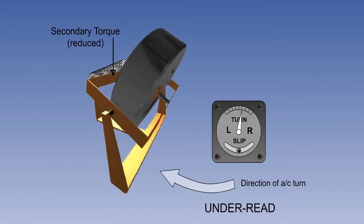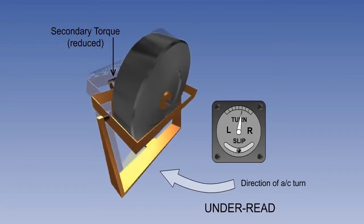If the gyro spin speed slows — which may happen in an air-driven gyro should the air filter become partially blocked or a leak develops — the gyro will underspeed, and the instrument will under-read the rate of turn. The reason that the gyro under-reads is that if the gyro spin rate slows down, rigidity reduces. However, the secondary precession must always be equal to the actual rate of turn of the aircraft.